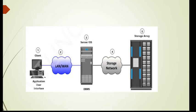In the second step, the client accesses the DBMS on the host through the application to provide order-related information such as the customer name, address, payment method, and the number and type of products ordered. In the third step, the DBMS will use the host operating system to write this data into the physical disk in the storage array. In step four, the storage network provides the communication link between the host and the storage array, and it transports the request to read or write data between them.